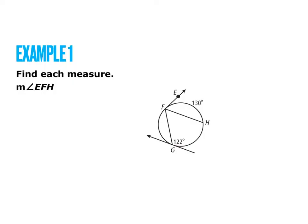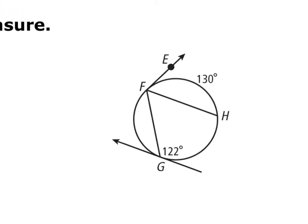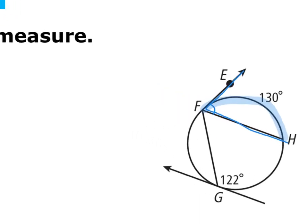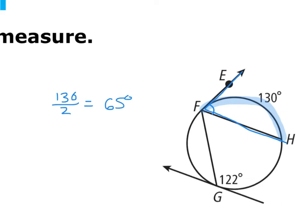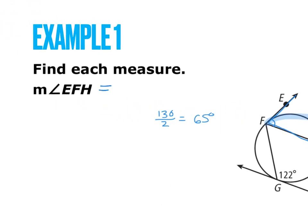Let's look at our first example. We need to find the measure of angle EFH. We see that our arc is 130 degrees, so our angle is going to be half the arc. We take 130 and divide it by 2, so our angle is going to be 65 degrees. The measure of angle EFH is 65 degrees.